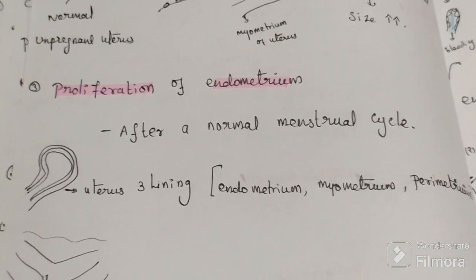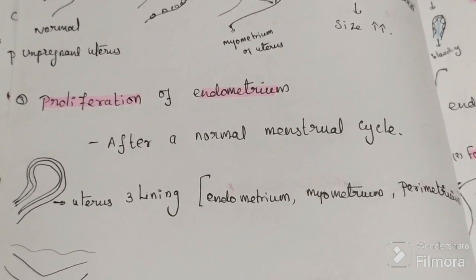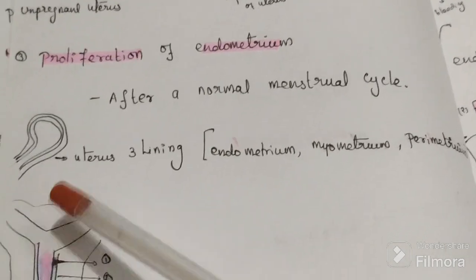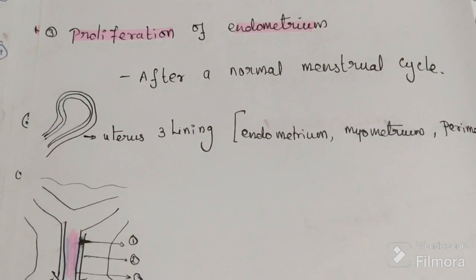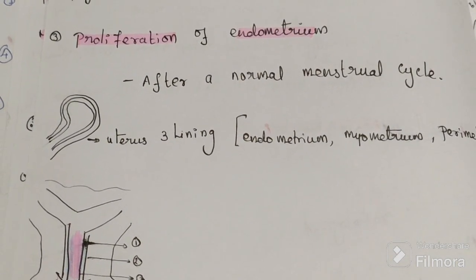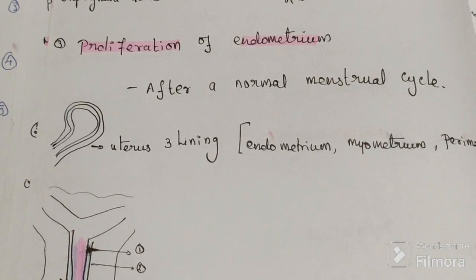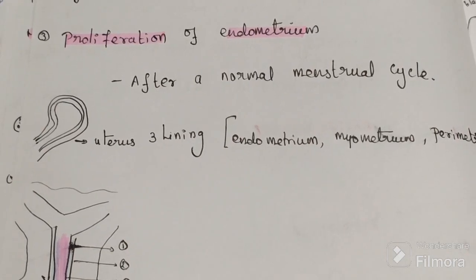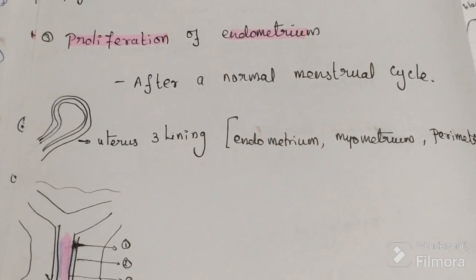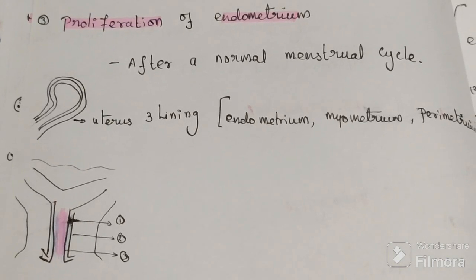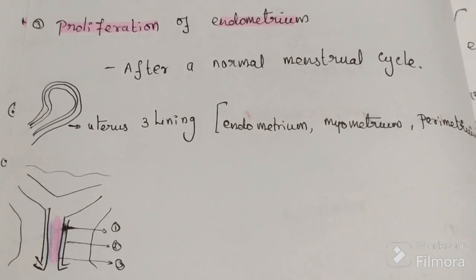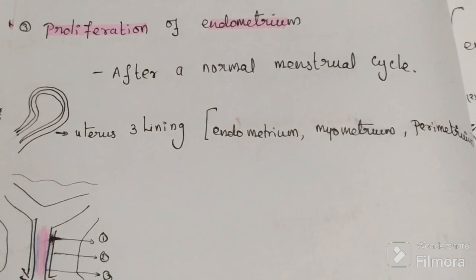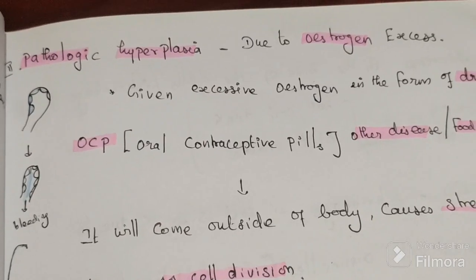Next is proliferation of the endometrium after normal menstruation. The endometrium has three layers. During menstruation, the endometrial layer sheds off and bleeds. After that, the layer undergoes hyperplasia every month — increasing in size after each menstruation cycle.